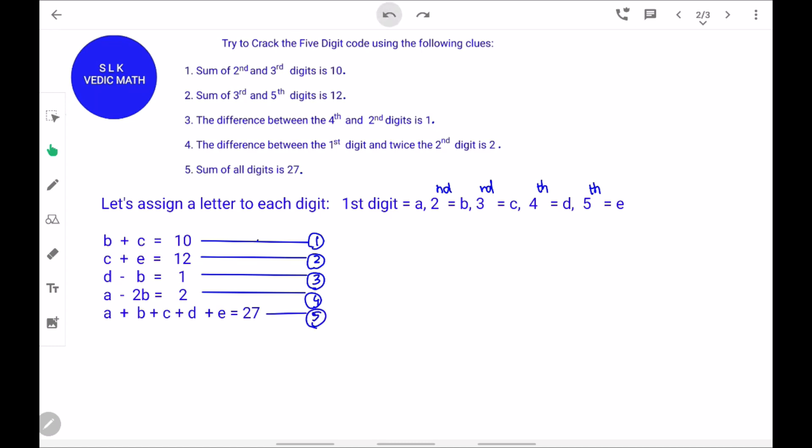And in the fifth clue, it says sum of all digits is 27. So, A plus B plus C plus D plus E equal to 27.